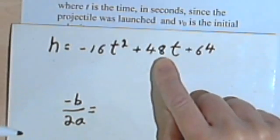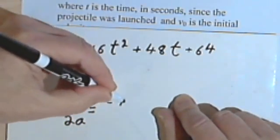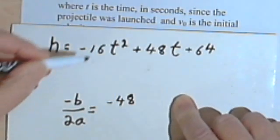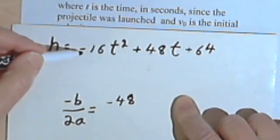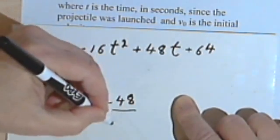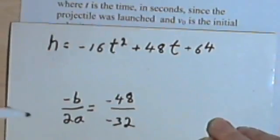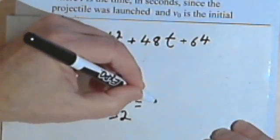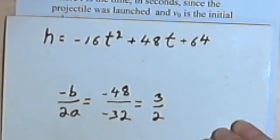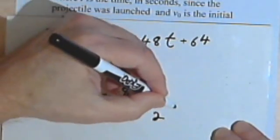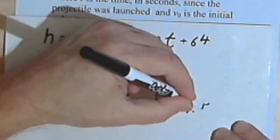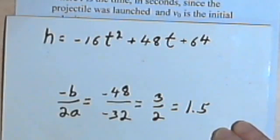Well, b is 48, so negative b is negative 48, a is negative 16. 2 times negative 16 is negative 32. And I can reduce this whole thing to 3 halves, or 1.5. So after 1.5 seconds, the projectile was at its maximum height.